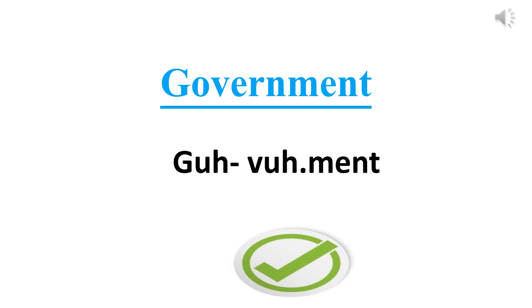The next word you can see on the screen is written like G-O-V-E-R-N-M-E-N-T. People used to call it like government, but this is the wrong pronunciation. The correct pronunciation of this word will be government, because the R is silent there — we don't pronounce the letter R. So it will be government.